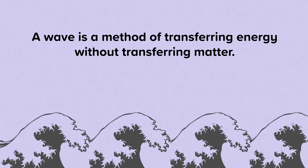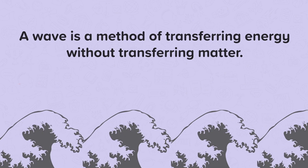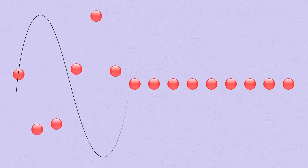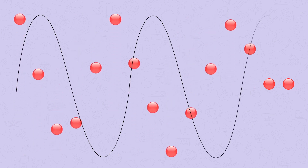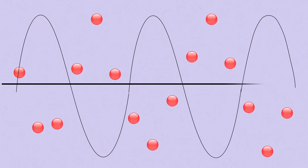There are two types of wave: transverse and longitudinal. A transverse wave is a wave whose vibrations or oscillations are perpendicular, or at right angles, to the direction of travel of the wave. These particles are vibrating up and down, but the wave is travelling from left to right. The vibrations are at right angles.